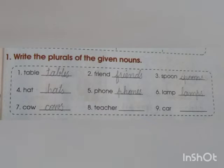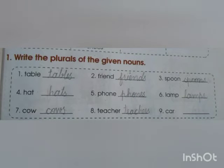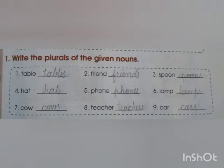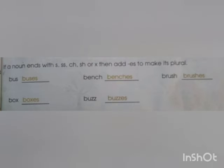Seventh word: cow → cows. Eighth word: teacher → teachers. Ninth word: car → cars. If a noun ends with 's', 'ss', 'ch', 'sh', or 'x', then add 'es' to make its plural. Like: bus → buses, bench → benches, brush → brushes.